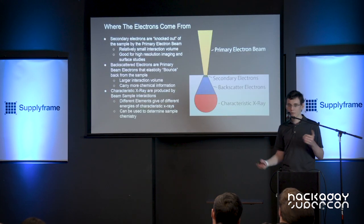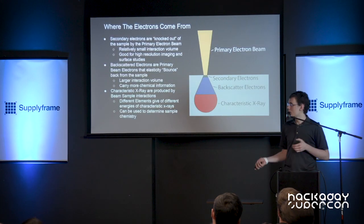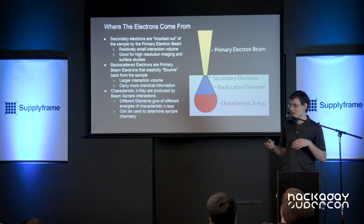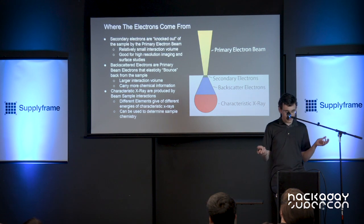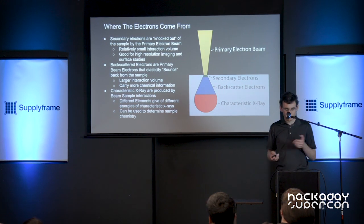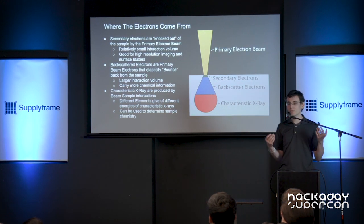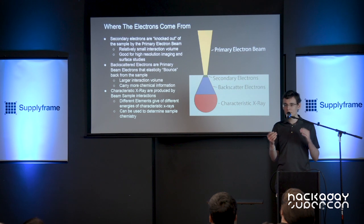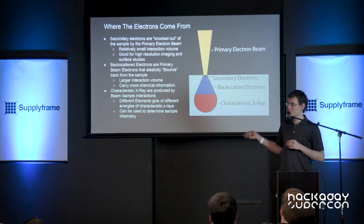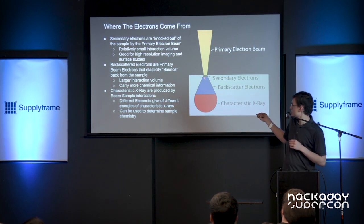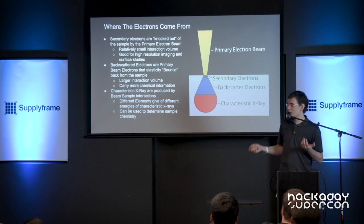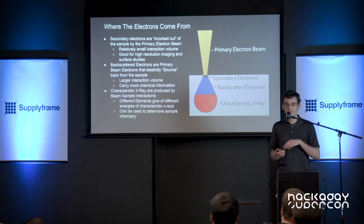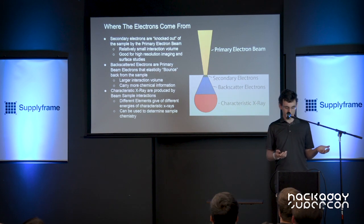Let's talk about where the electrons come from in an SEM. We start with secondary electrons. Secondary electrons are knocked out of the sample by the primary beam. They come from the surface of the sample and from a relatively small interaction volume, so they're very high resolution and really good for studying the surface of a sample.